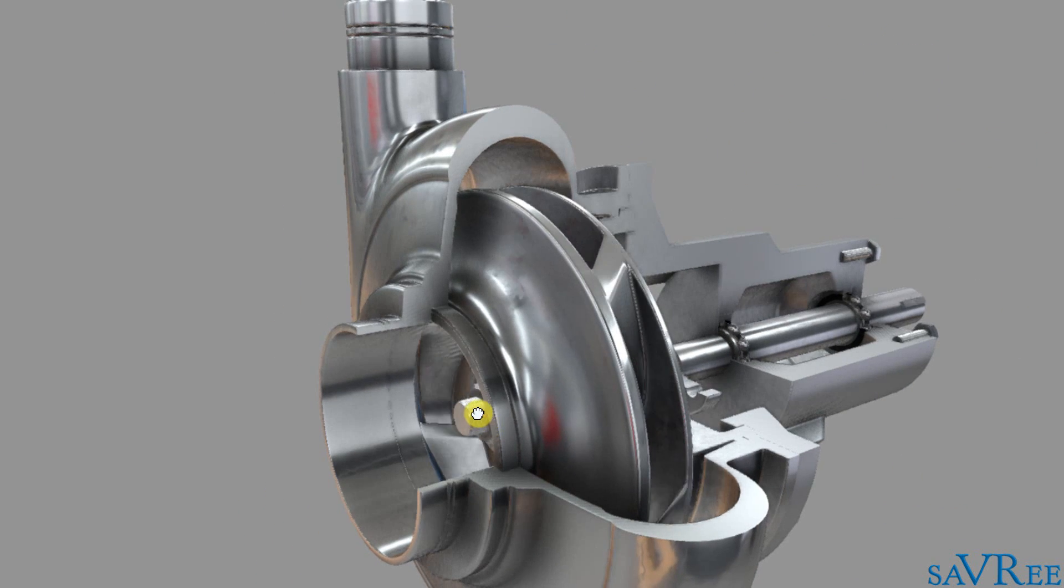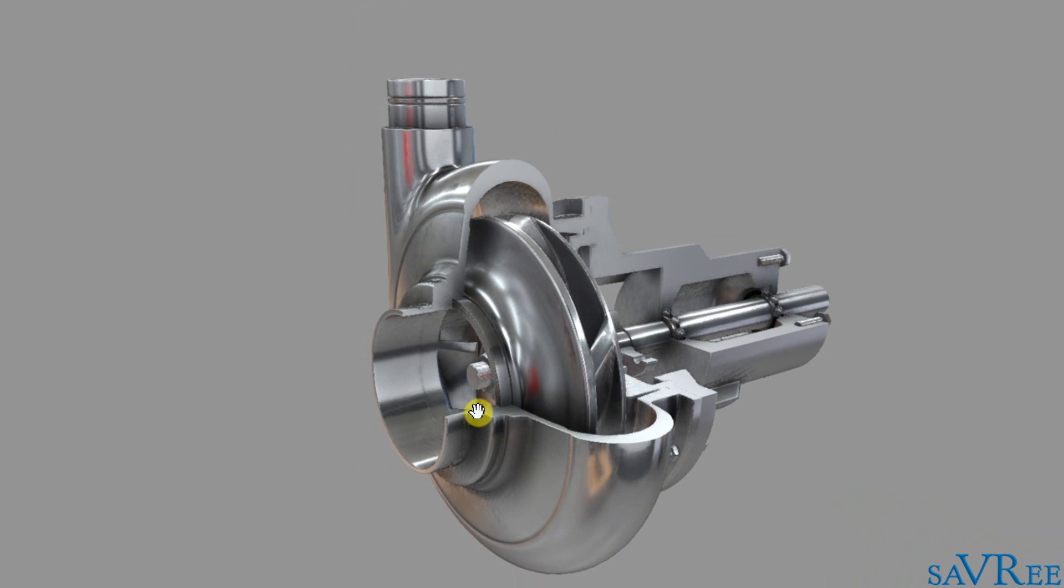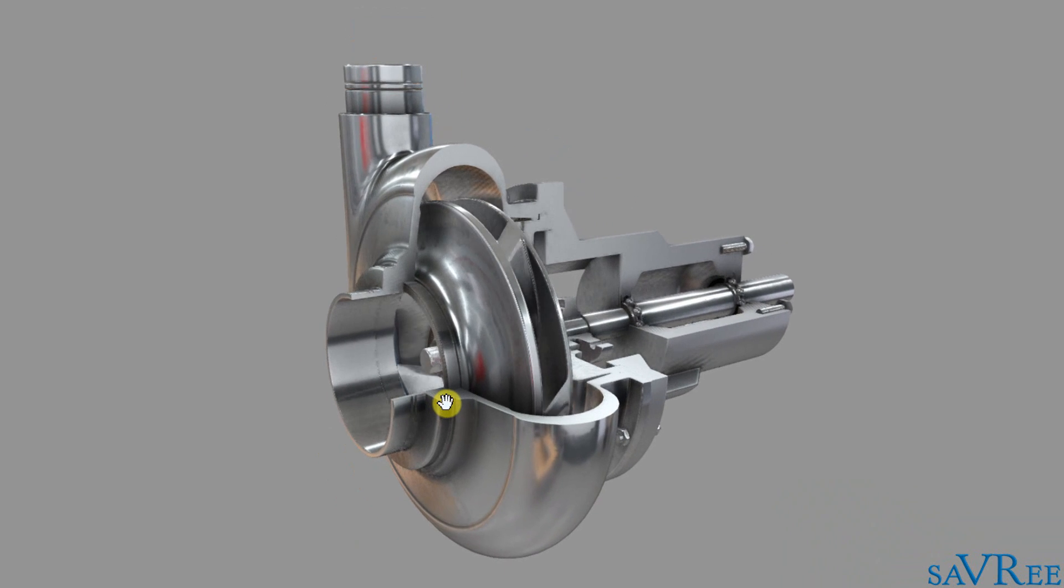So how is it that the centrifugal pump works? You can see from the design and the animation that the pump's construction is quite simple. Essentially, we've got an impeller rotating within a volute casing. And as it rotates through the liquid, we're creating pressure. And this pressure differential, that is the difference between the suction side of the pump and the discharge side of the pump, is what causes the liquid to flow.